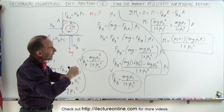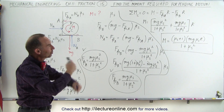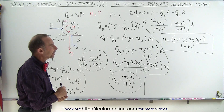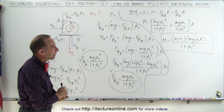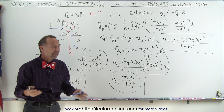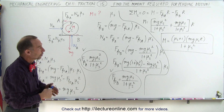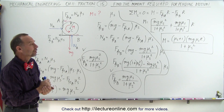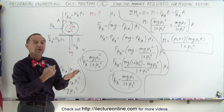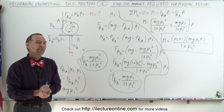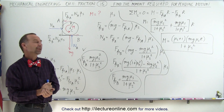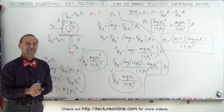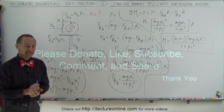Any additional moment beyond this and the wheel begins to slip and starts rotating. That's how we find the moment for impending motion. Of course, we don't have values for R, M, or mu sub s here, but if we did, we'd just plug them in to get the exact number. Thank you.